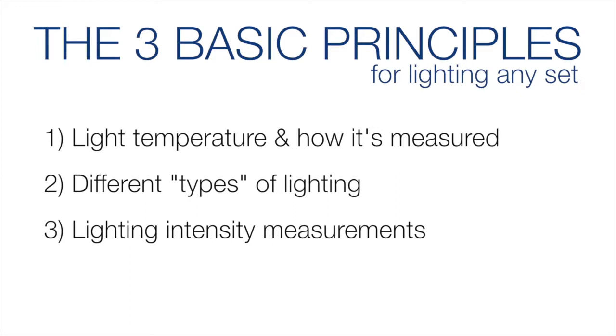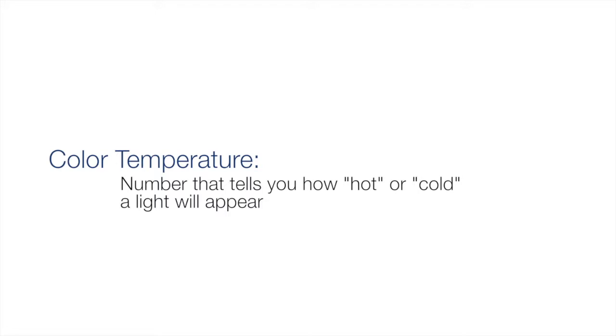Color temperature is a number that tells you how hot or cold a light will appear. It's not measured in degrees Fahrenheit or degrees Celsius like you would imagine. Instead, it has its very own thermodynamic temperature scale called the Kelvin scale. And if you're asking yourself why that sounds familiar, it's because you learned it when you took chemistry in high school.